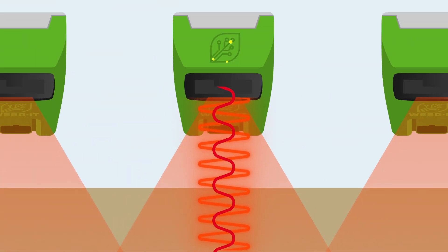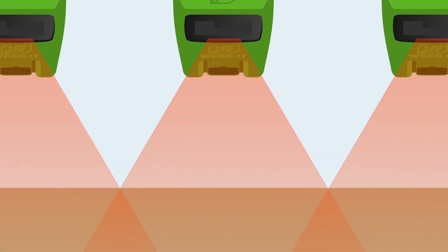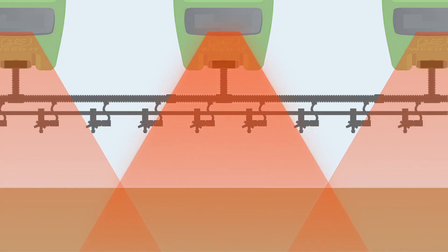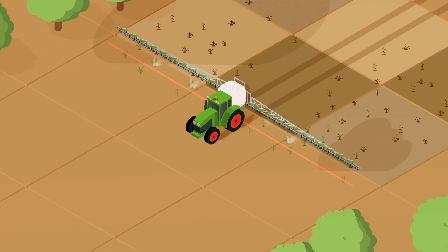This is all detected by the Weedit sensors, where everything is processed. Once the chlorophyll is measured by the Weedit sensor, the nozzles target every single weed separately with its ultra-fast PWM technology.